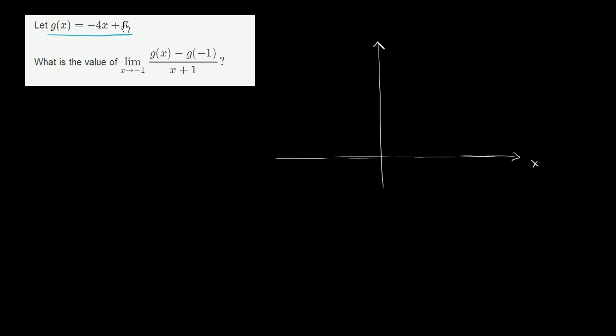Let me draw some axes here. This is my vertical axis and this is my horizontal axis. Let's say that this is my x-axis. I'll graph g of x. g of x is going to have a positive y-intercept, or vertical axis intercept. It's going to have a slope of negative 4, so it's going to look something like that. We already know that the slope here is going to be negative 4 — we get that right from the slope-intercept form of the equation. Slope is equal to negative 4.